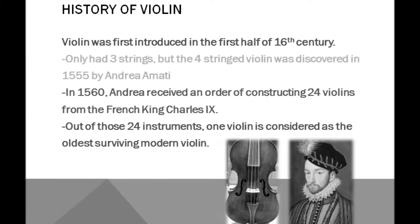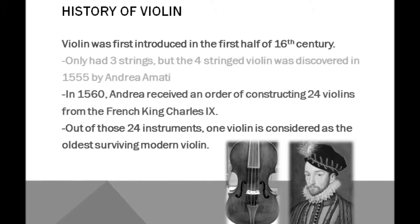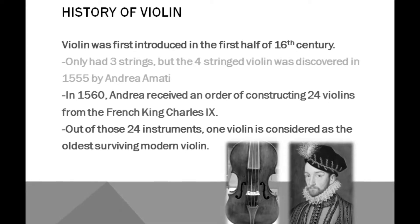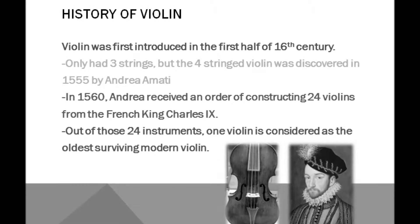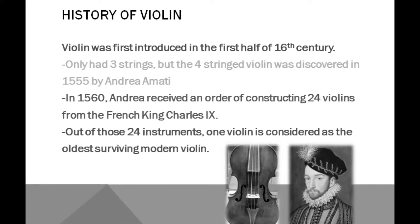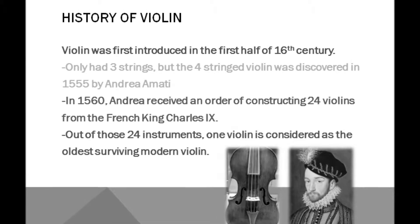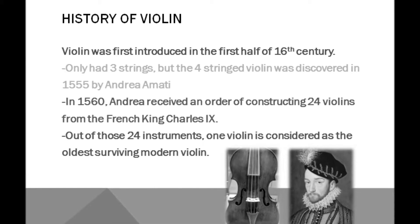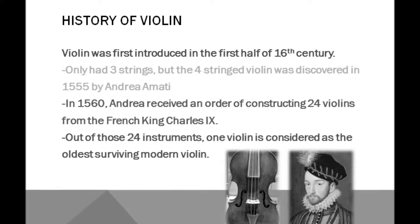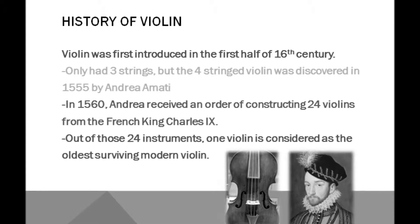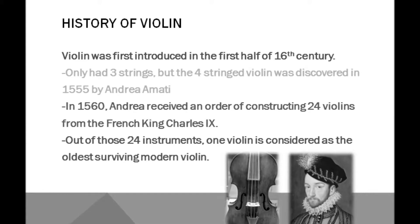In 1560, Andrea Amati got an order from Charles IX, the French king, to construct 24 modern violins. Out of those 24 instruments, one instrument still survives today and is considered the oldest surviving violin.